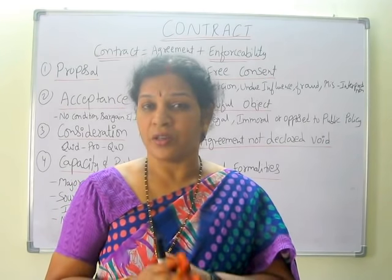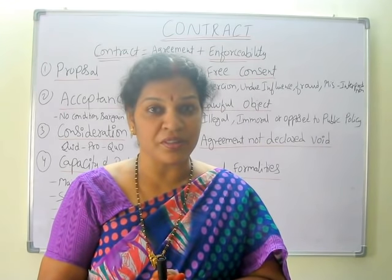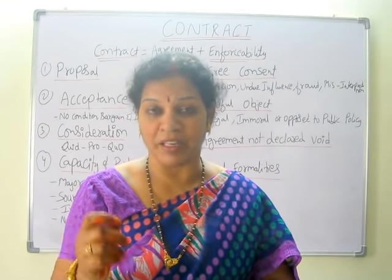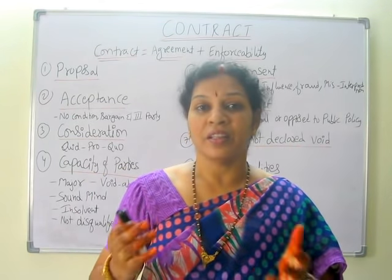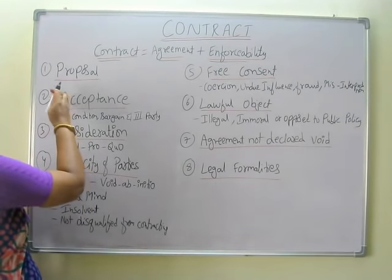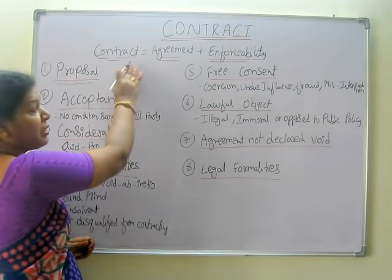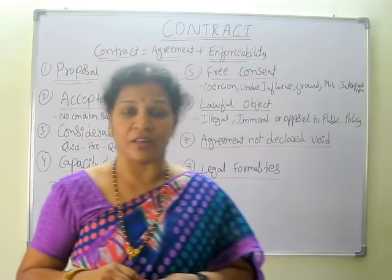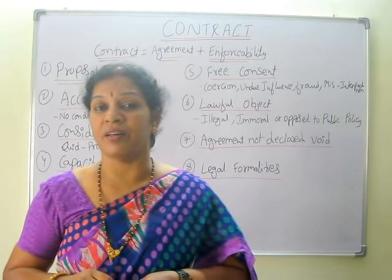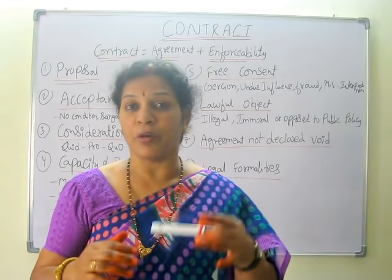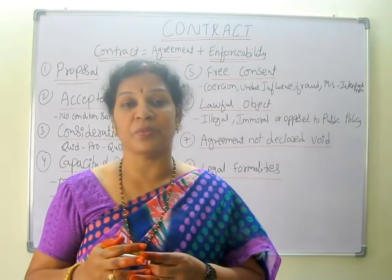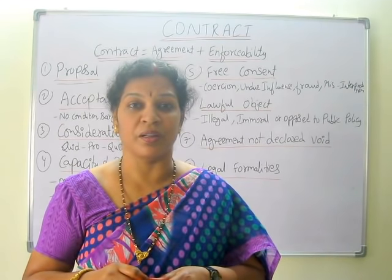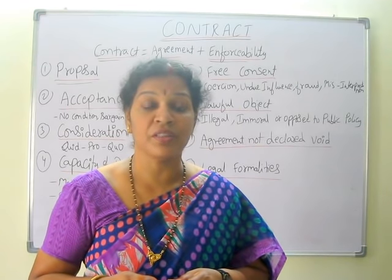Contract is having a lot of features, and this is a very important topic. All the features we are going to discuss in detail — each and every feature is going to be a very big concept. Right now we will see the contract features. Before going to the first feature, make it very clear: contract means agreement plus enforceability. Only two words. For example, two parties made an agreement — one wanted to sell the property and another wanted to purchase the property. When this agreement can be enforceable into the court of law, then this will become a contract.